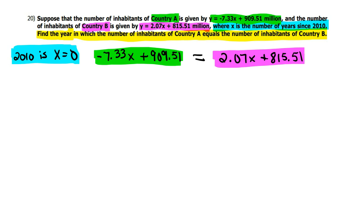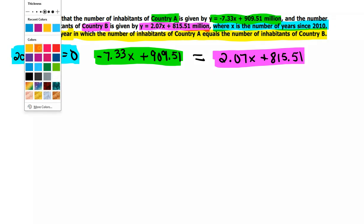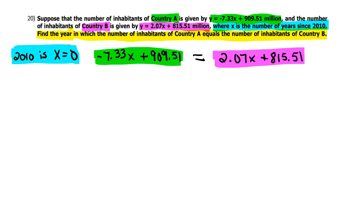So, I'm going to go with orange this time. Let's see. I like my X's to be positive, so I'm going to add 7.33X to cancel it out on the left. But that means the right side will also add that, and it's going to get bigger.